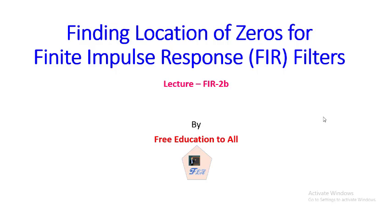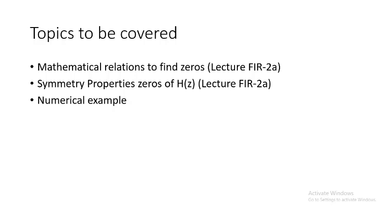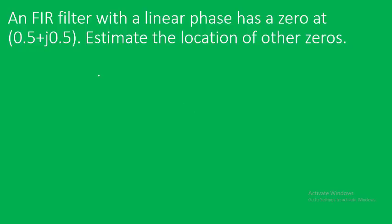Welcome back. We'll continue our previous discussion. In the first part, we discussed the mathematical relations to find the zeros of an FIR filter and the symmetry properties of zeros of H(z). From these symmetry properties, we would like to solve a numerical here so you can understand how these zero locations can be found if one zero location is given.